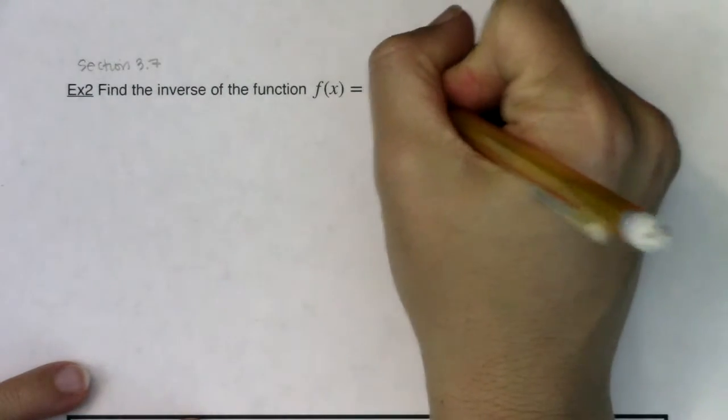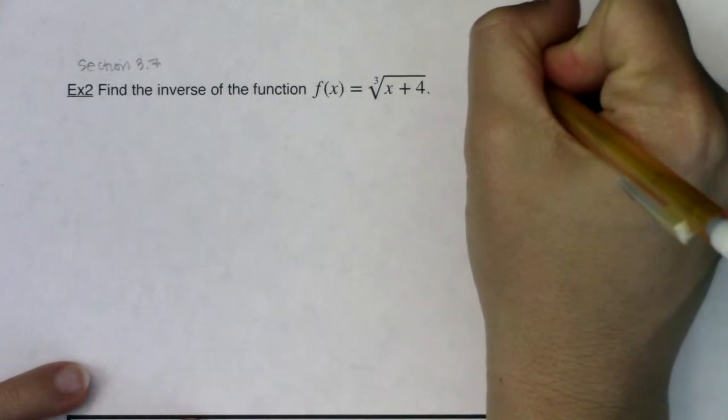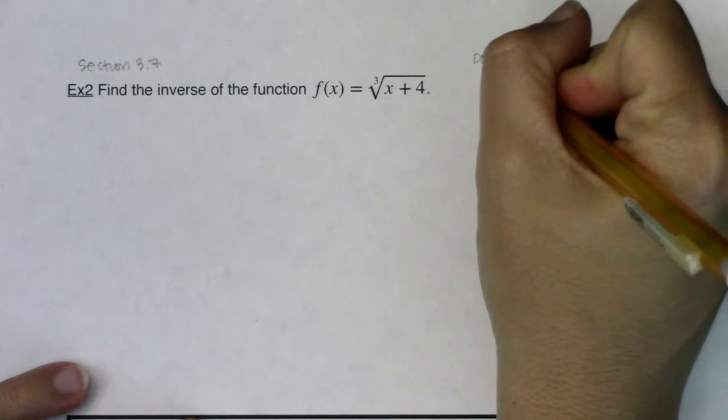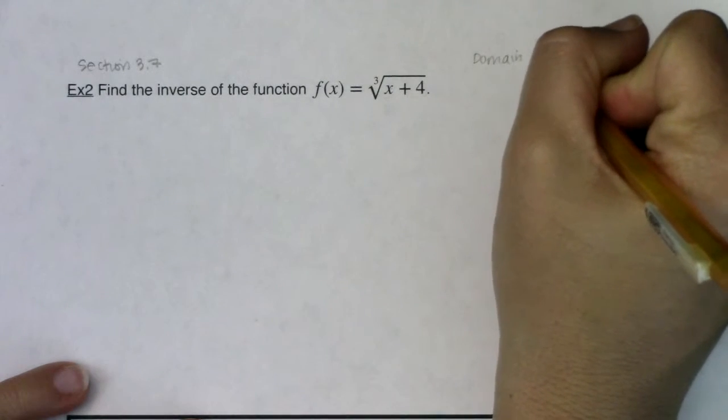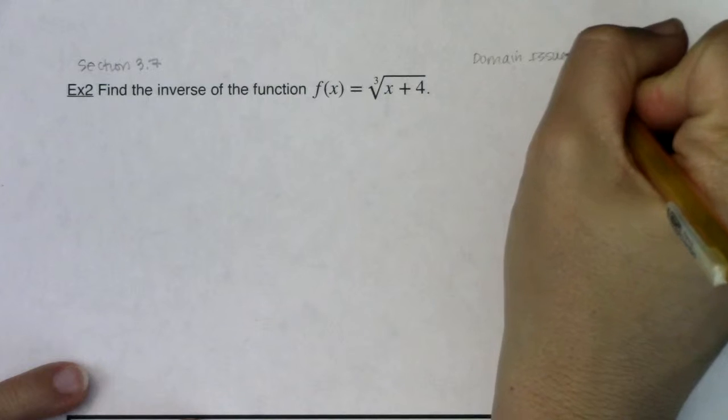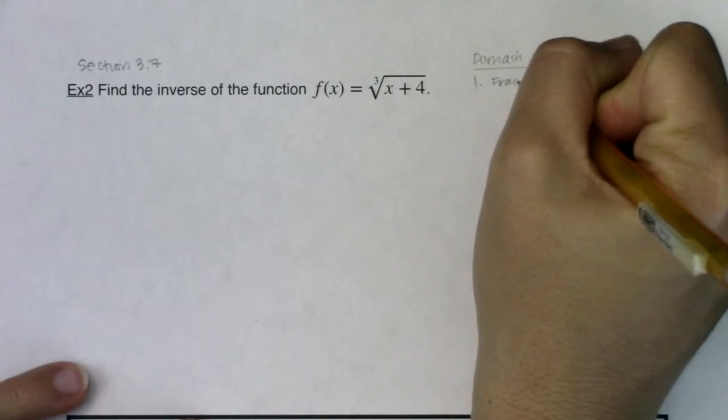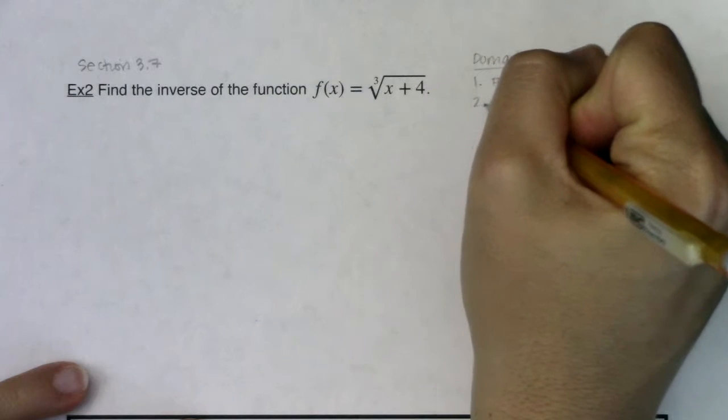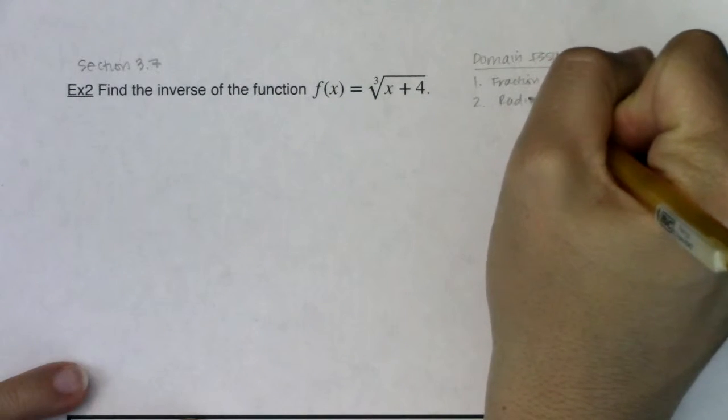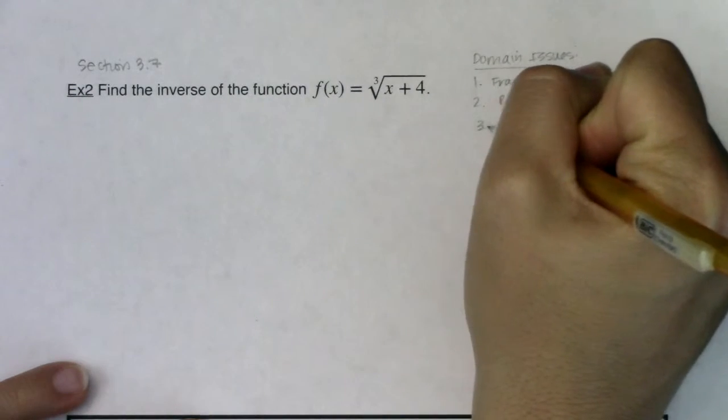We've talked about the three domain issues that we can have in math. In terms of domain issues, we have fractions where the denominator is zero, radicals where we have an even index and a negative radicand, and logarithms.